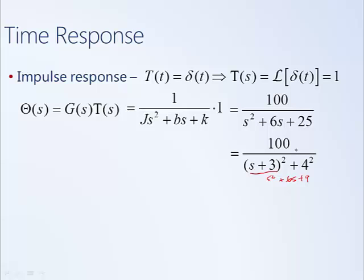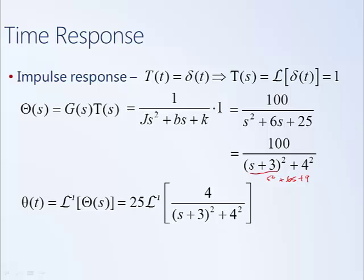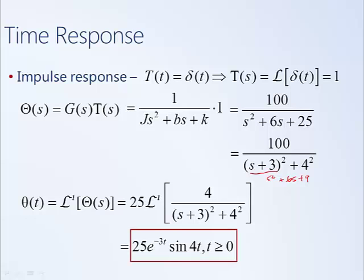This has a similar form to a sine — omega over (s² + omega²) — but the shift in the Laplace domain corresponds to multiplication by an exponential in the time domain. To get the form we want, we factor out 25 to get a 4 in the numerator. Recognizing this from our Laplace transform pairs table: the shift by 3 corresponds to e^(−3t), and the remainder is sin(4t) since 4 is omega. So an impulsive torque applied to the drive line causes the angular twist to ring — oscillating with decaying amplitude.